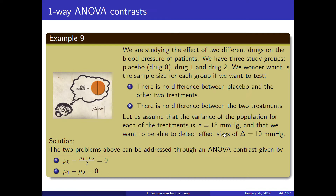Here we have the variance and this is the change we want to be able to detect. The first problem — no difference between the placebo and the other two treatments — can be formulated by computing the average of the two treatments and comparing it to the placebo mean; this difference should be zero. The difference between the two treatments can be compared directly.